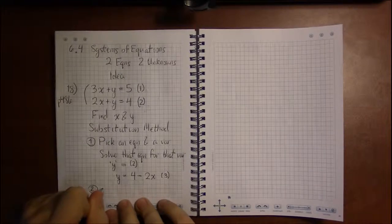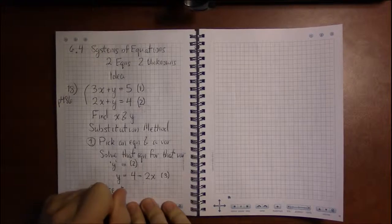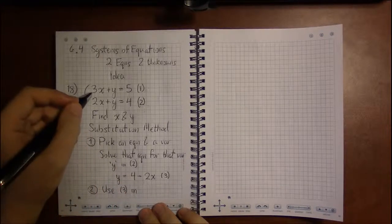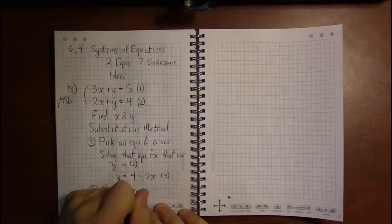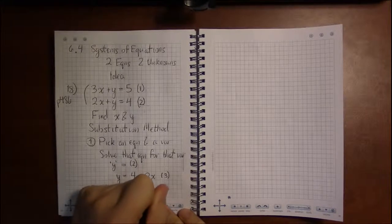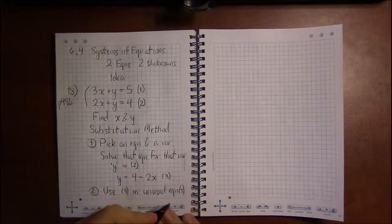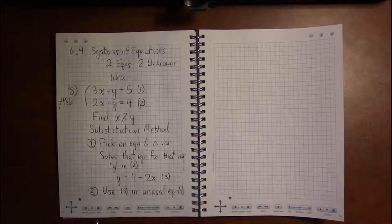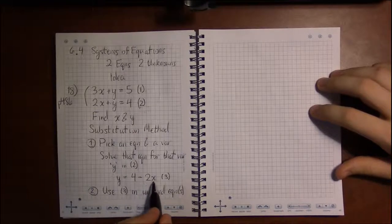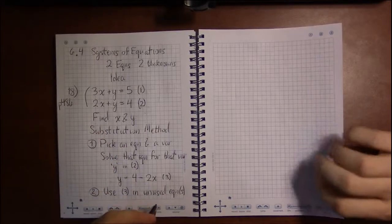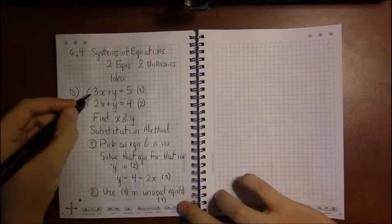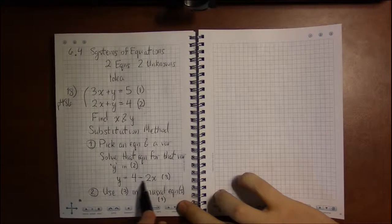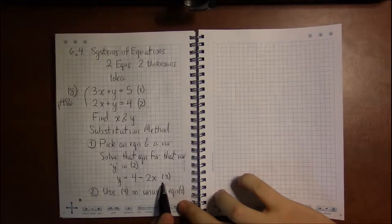Because in the very next step, I'm going to use equation three in the other equations, in equation one, in the unused equation. For example, I've already used two to get three. I'm going to use three in the unused equations. In this case, there will only be one unused equation, but you can have systems of three equations or four equations or however many equations that you like. But sticking to this case, the unused equation is equation number one. So we're going to write down equation one, but instead of writing y, we're going to use three to write down four minus two x instead, because three tells us that y is four minus two x.